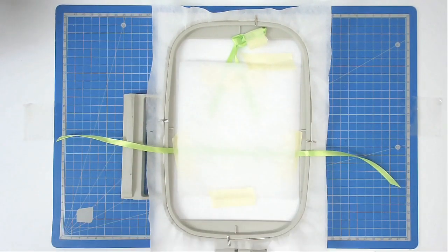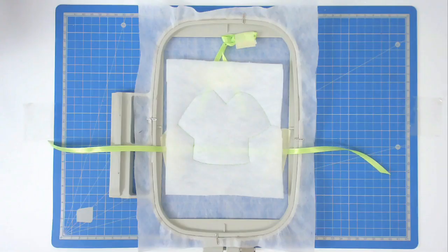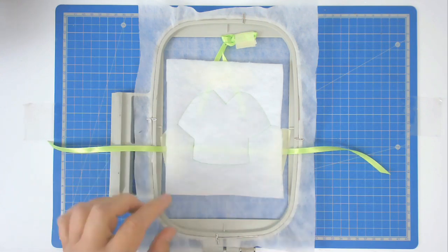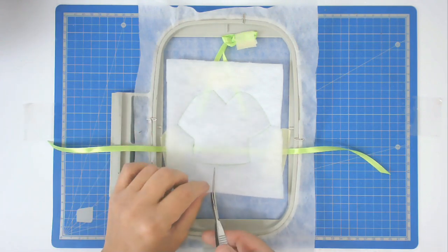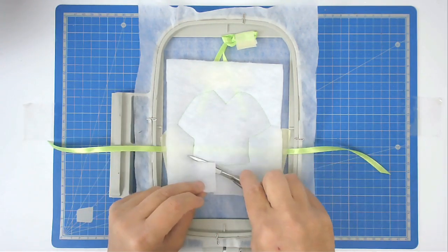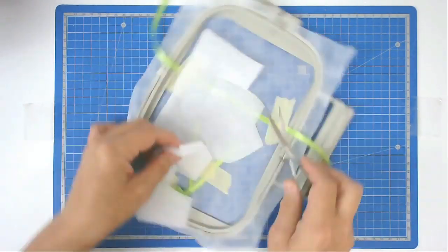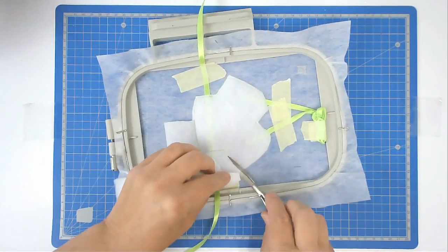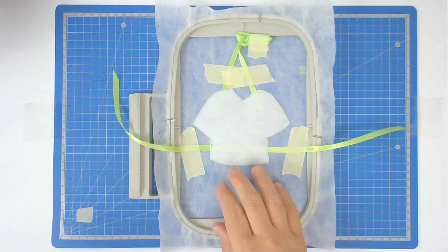You're now going to trim up the excess batting from around your stitch line. Take care not to cut your ribbon tails off if you're using ribbon. We could have added the backing with the batting, but I haven't. It doesn't matter because it's going to go on now.